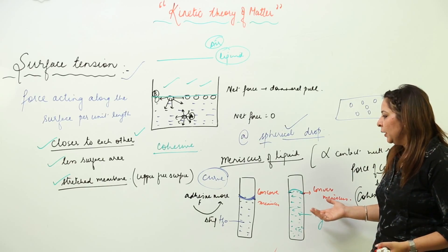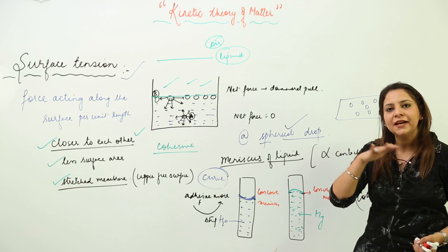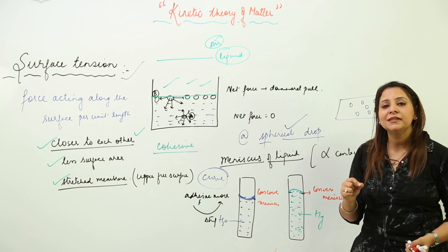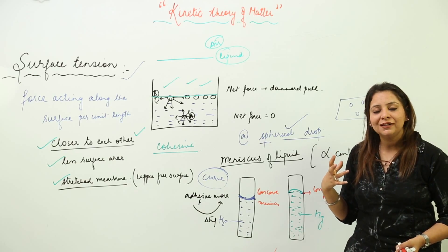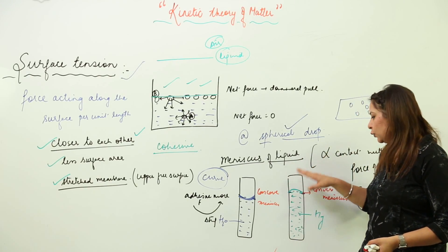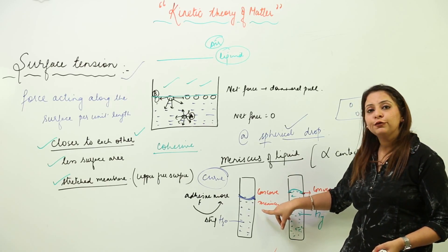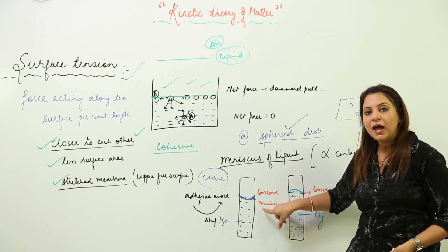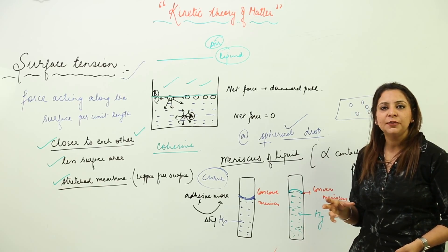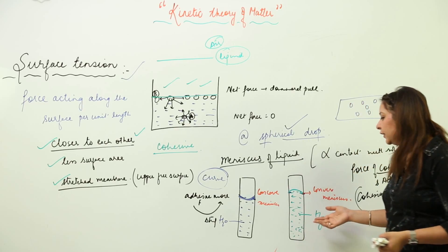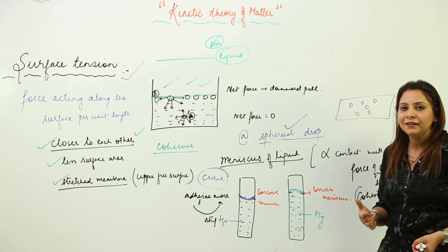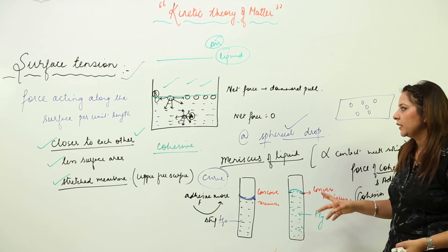To summarize: meniscus is the upper layer curve that appears at the point of contact of a liquid with a solid. It can be either a concave meniscus — an inward depression — or a convex meniscus — an outward bulging. Concave meniscus occurs when adhesive force is greater than cohesive force, as in water and glass. Convex meniscus occurs when cohesive force is stronger than adhesive force, as in mercury, where cohesive forces are much stronger than adhesive forces.